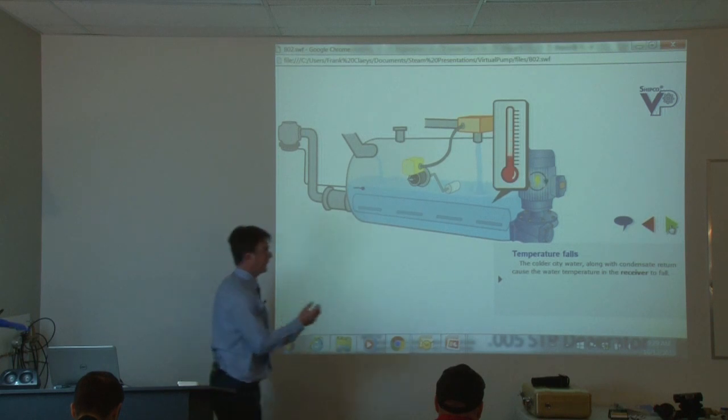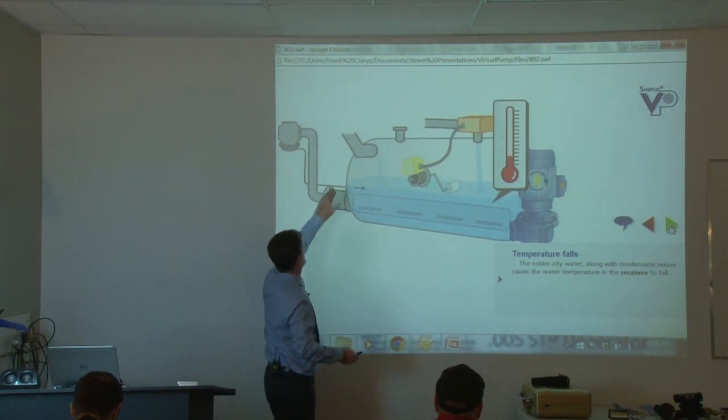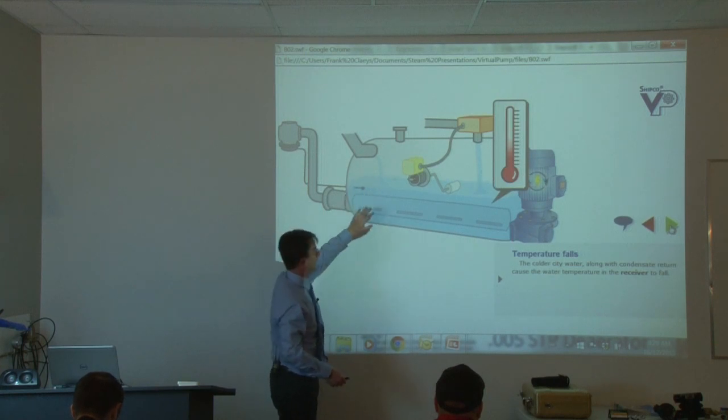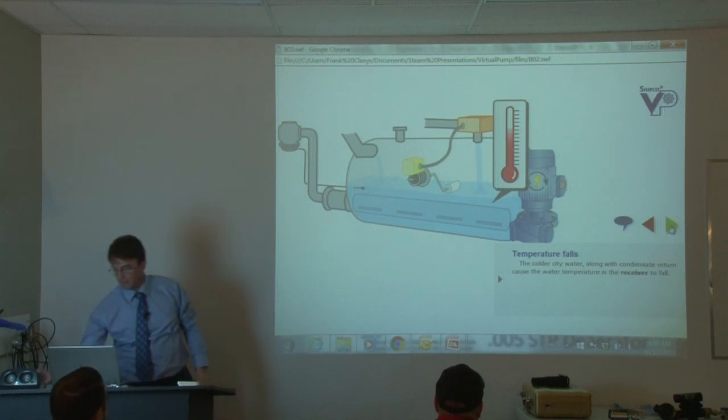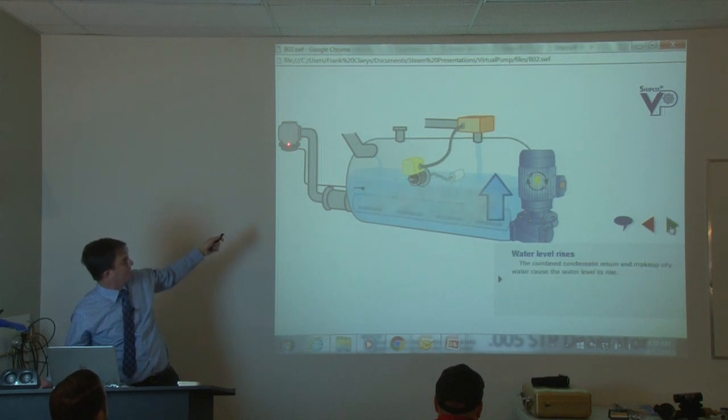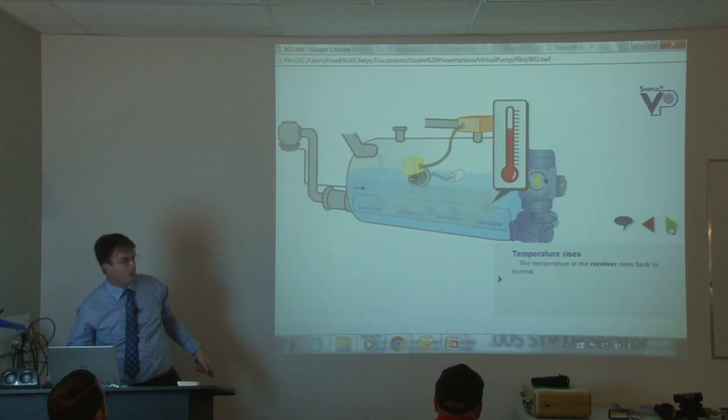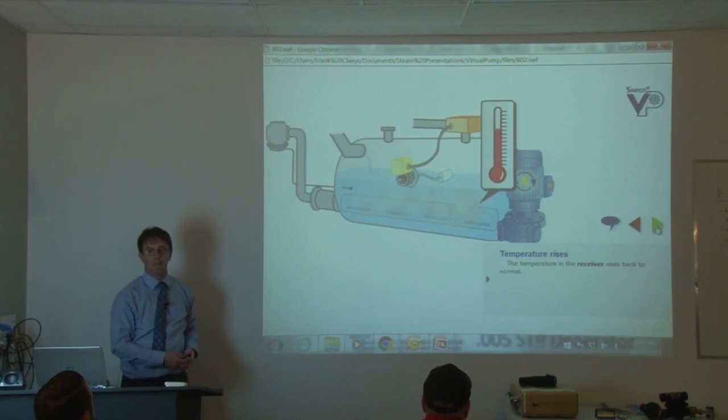But the solenoid lets fresh makeup water into the tank, which is much cooler than the condensate. The problem is then the water in the tank will drop down. And so in this case, we're going to add in a temperature sensor. The temperature sensor tells that valve, give me some steam into the sparge pipe. So anybody can tell me why you'd want to raise the temperature in the tank? Any guess?